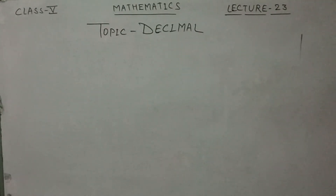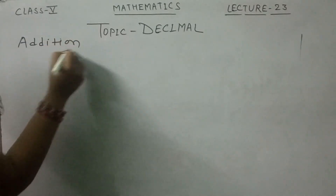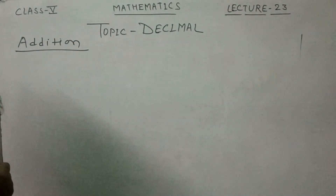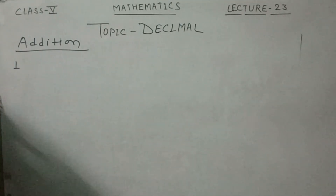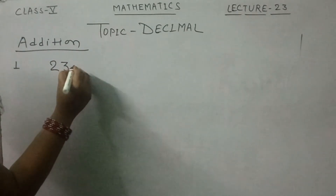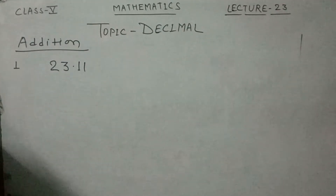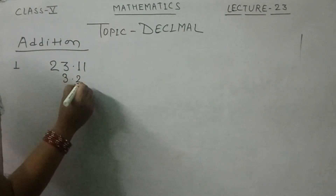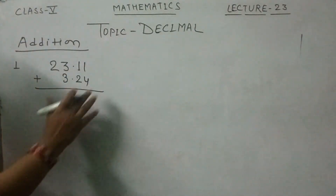Now, how to add decimal numbers? Addition of decimal numbers. I will take one question from your book. The first number is 23.11 and the second number is 3.24. Here, the numbers are already arranged and given.